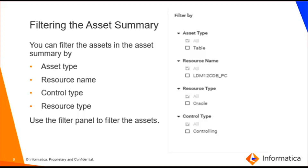You can filter the assets in the asset summary by asset type, resource name, control type, or resource type. Use the filter panel to filter the assets. To filter the asset summary, select the asset types, resource name, resource type, and control types that you want to view. To remove all filters of a particular type, you can select all. Note that the filters you apply in the asset summary view do not apply to the lineage and impact diagram.